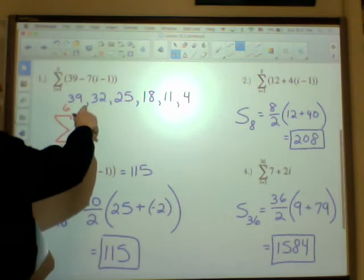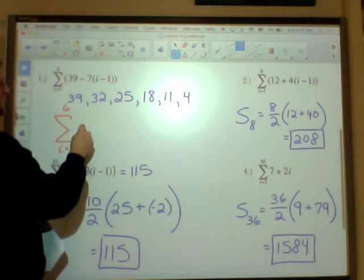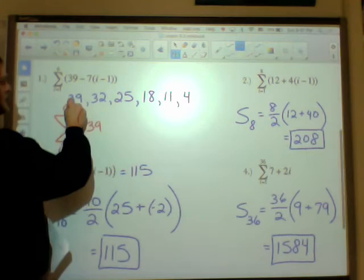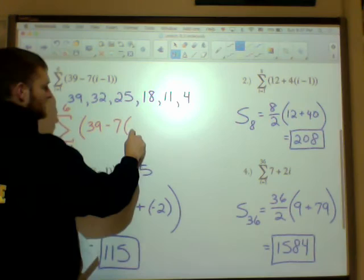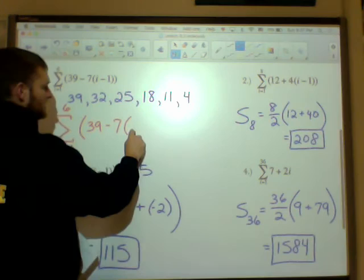Then you just write, essentially write the explicit formula for that particular sequence. So you think to yourself, well, and I'm going to put this all in parentheses. So I know my first term is 39. I can tell that my common difference is a negative 7. And instead of n minus 1, i minus 1, and I've got it. So essentially, you've done this before. You've written explicit formulas before. Now you're going to write it using this i because that's my index. Other than that, not a major change.